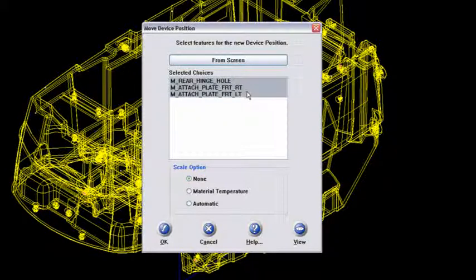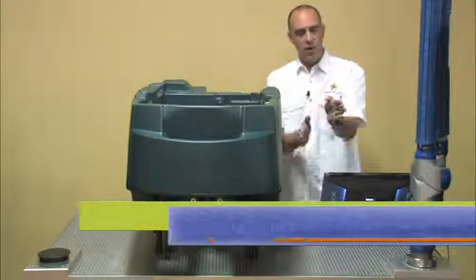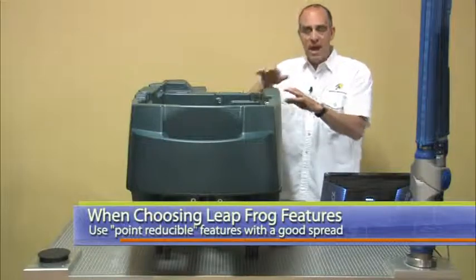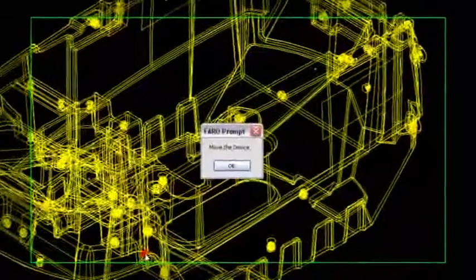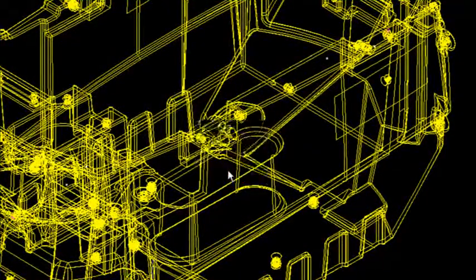But if you want to go more to stabilize the part, that's totally fine. I've measured three here that are two up in the front on either side, and I've measured the hinge hole in the back here. So pretty good spread on the data. So I'm going to highlight those and say okay. Now what it's saying is Move the Device. And I'll say okay to that.